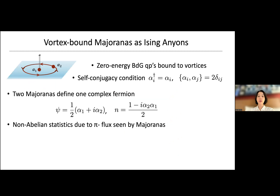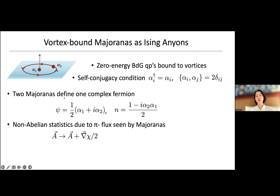A prototypical textbook example that illustrates how something can be non-Abelian is vortex-bound Majoranas. Vortex-bound Majoranas are zero-energy Bogoliubov-degenerate quasiparticles bound to vortices. Because the vacuum here is a superconductor, these Majoranas are not like Majoranas in vacuum, but in a superconductor they end up seeing a flux of pi. As a zero-energy Bogoliubov quasiparticle, Majoranas satisfy the self-conjugacy condition, and two Majoranas apart share one complex fermion between them.